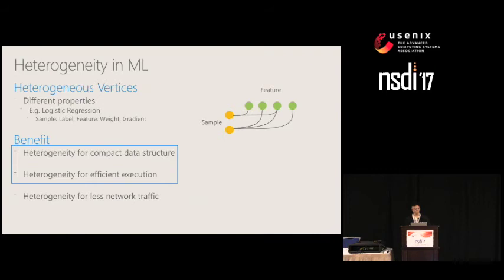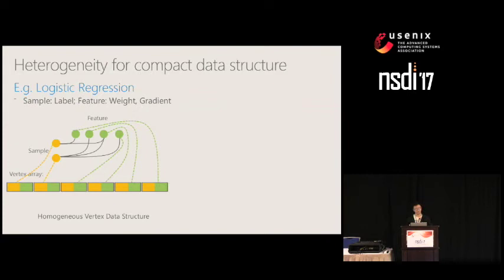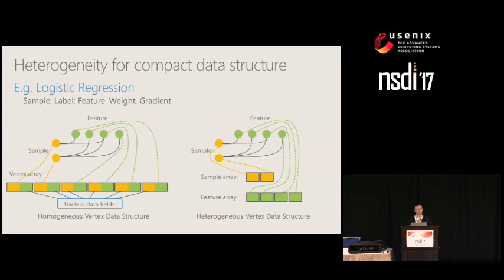For compact data structure, using logistic regression as an example: in existing graph engines, vertices are placed in a single vertex array assuming a homogeneous data type. The unused fields — the green field of sample vertices and yellow field of feature vertices — harm data locality. In TAPS2, we arrange different types of vertices into different data arrays — sample vertices in a sample array and feature vertices in a feature array — making the data structure more compact.